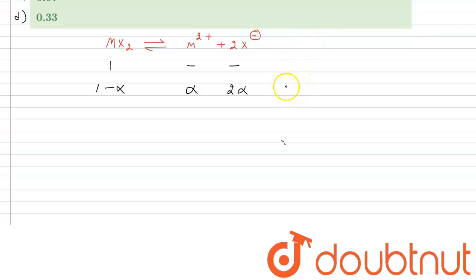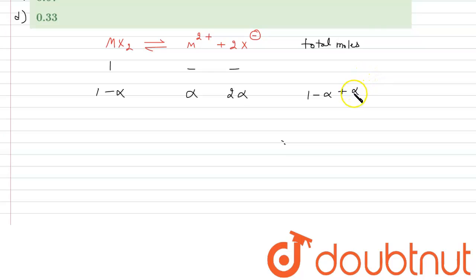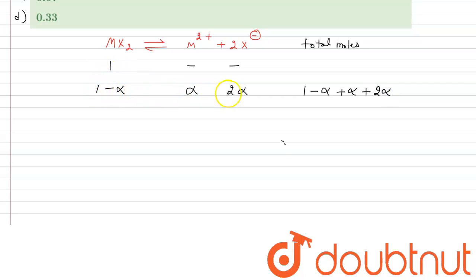The total moles after dissociation are: (1 − α) + α + 2α, which simplifies to 1 + 2α. So the total moles after some time t equals 1 + 2α.